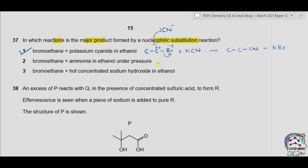Reaction 2: bromoethane plus ethanolic ammonia. Ammonia has a lone pair of electrons and is also a nucleophile. It attacks the partial positive carbon, the C-Br bond breaks, and the product is CH₃CH₂NH₂ with HBr lost. Br is substituted by NH₂, so this is nucleophilic substitution. Option 2 is also correct.